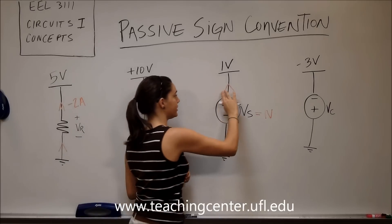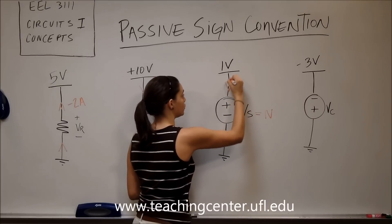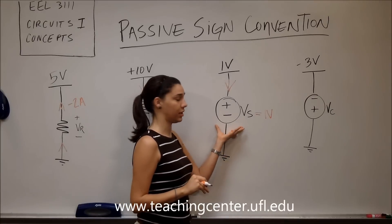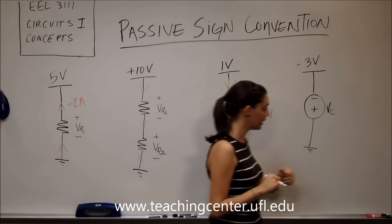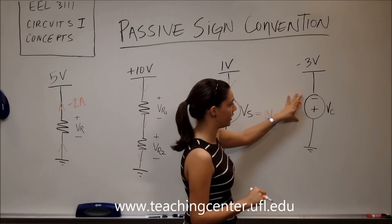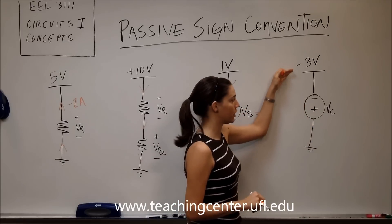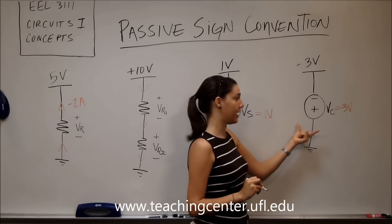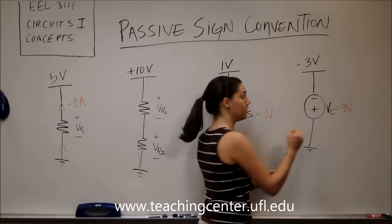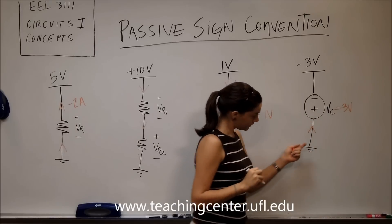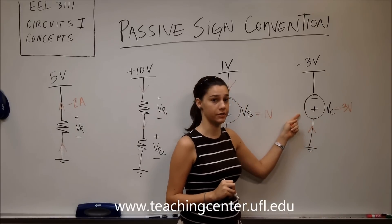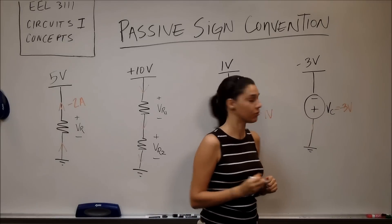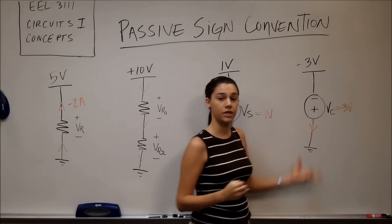But if we were to say that the current is pointing towards the positive terminal, then passive sign convention would be obeyed and the voltage source would be absorbing power. For this last example, the voltage supply has been flipped and Vs has negative three volts. If we want passive sign convention to be obeyed, the arrow needs to point towards the positive terminal. Since this behaves like the power jack in our wall, the current needs to come out of the positive terminal into the circuit.